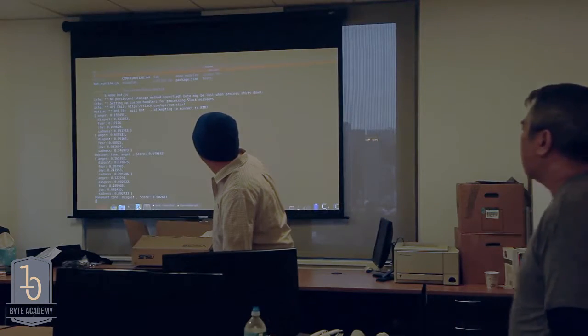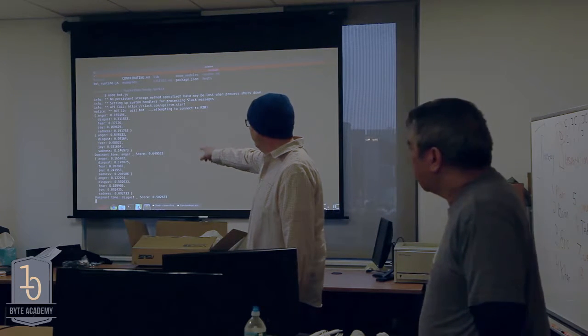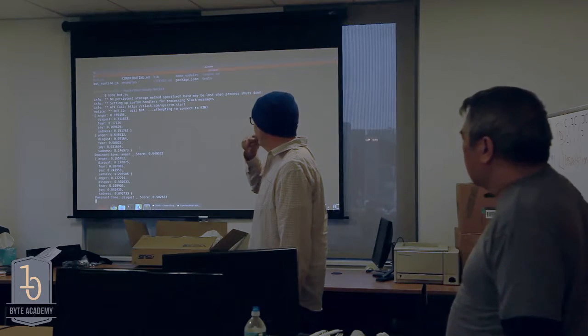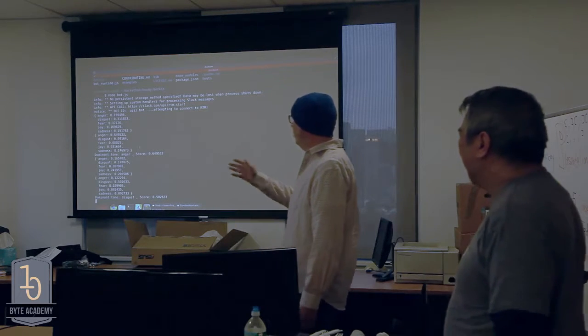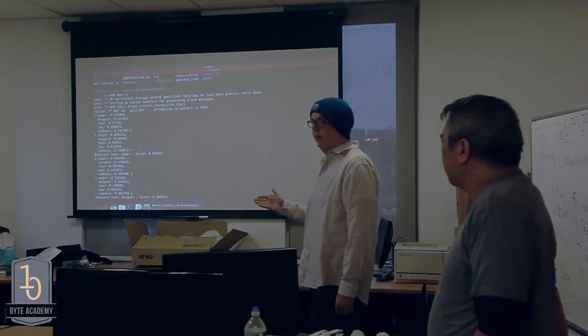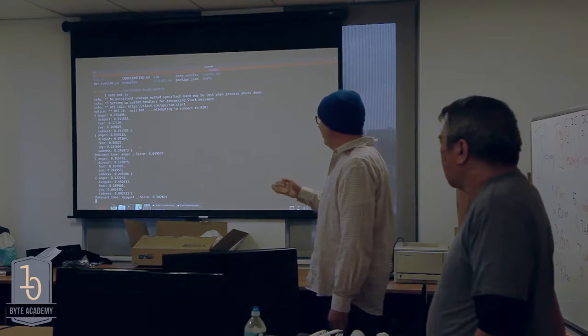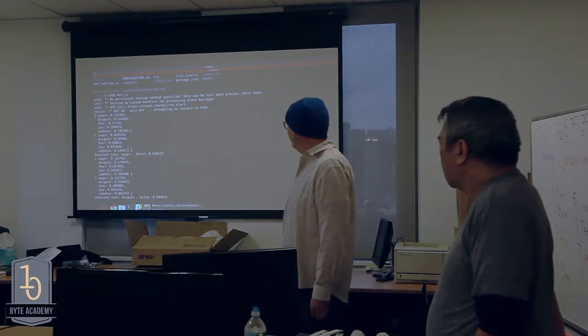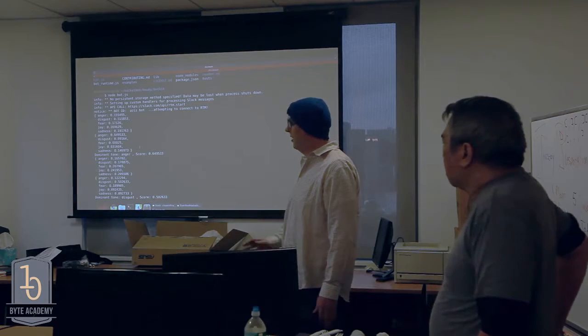This is some of the data we're getting from the API. You can see that second to last dictionary is when I said 'I am neutral', showing levels between zero and one. For neutral it won't trigger a threshold in any dominant tone. For that last one where I said 'I'm going to vomit', the dominant tone is disgust with a score of 0.5 on the disgust level.